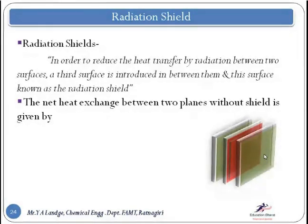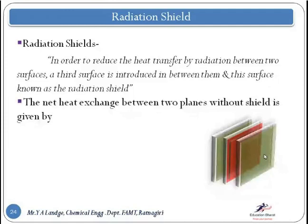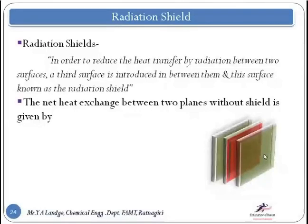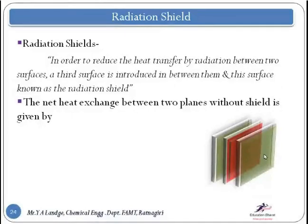Just like in a furnace — the refractory bricks in the furnace are nothing but a radiation shield. Daily heat transfer from the furnace to the surrounding is by radiation. To control it, we cannot use insulation because radiation doesn't require any medium to transfer. So we put a shield — the refractory bricks placed in between — to reduce heat losses from the furnace to the surrounding.